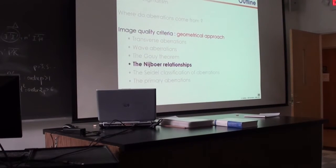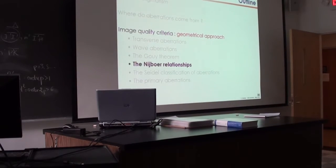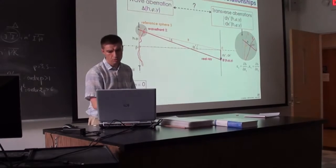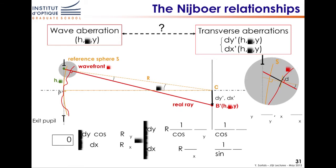For those of you who do not have a Zygo at home to measure aberrations, all you have is maybe a beam profiler — something that analyzes the shape of your beam. It is interesting to understand the intuition of how you go from the optical path difference to the transverse aberrations, and these are the mutual relationships. How do you connect delta to the transverse aberration? The answer is yes, there is a connection.